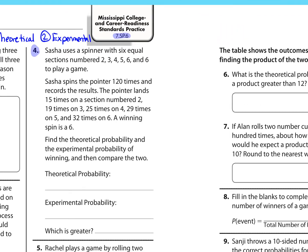It says Sasha uses a spinner with 6 equal sections numbered 2, 3, 4, 5, 6, and 6 to play a game. Sasha spins the pointer 120 times and records the results. And it gives you all the results here, and it tells you a winning number, a winning spin is a 6. So find the theoretical probability and the experimental probability of winning, and then compare the two.